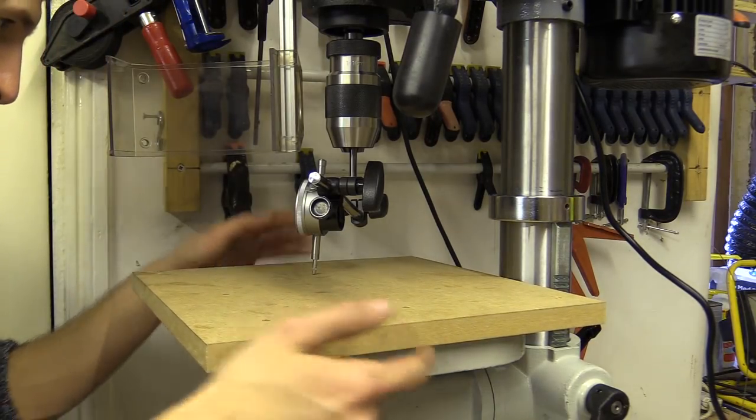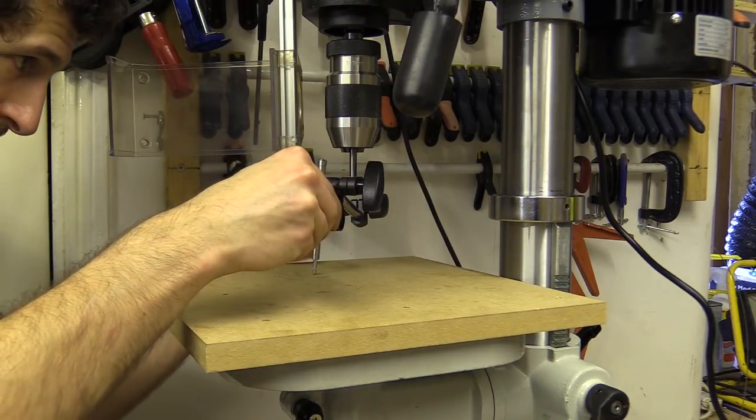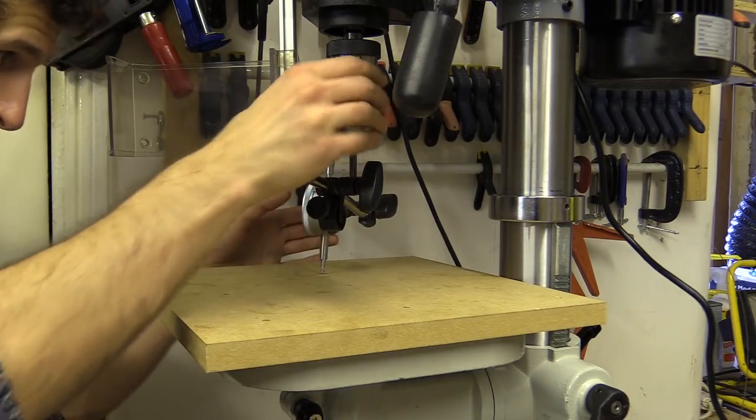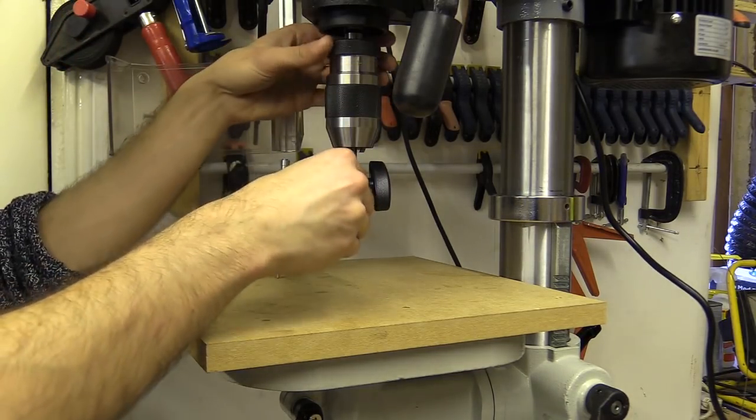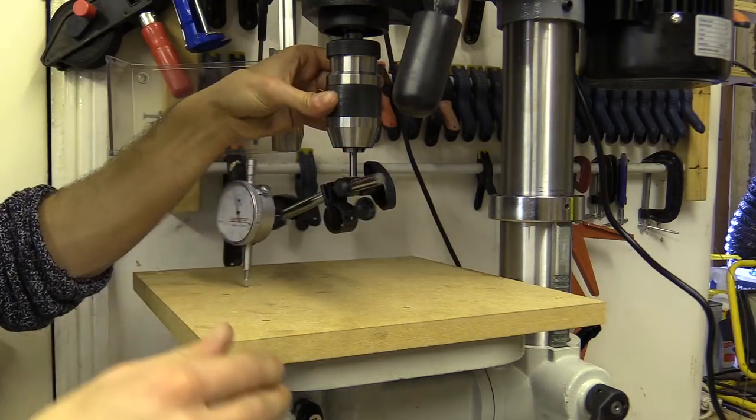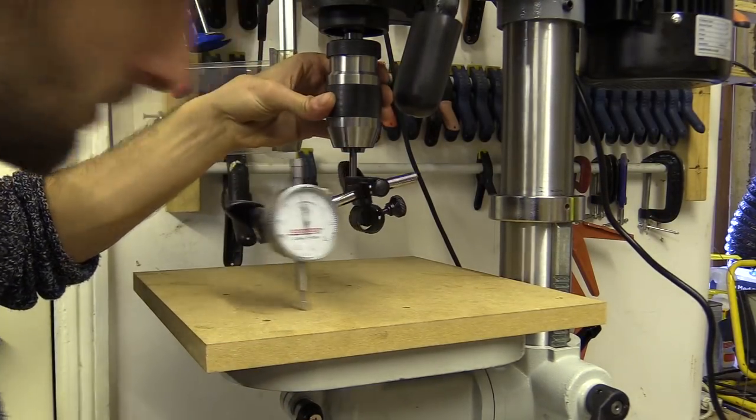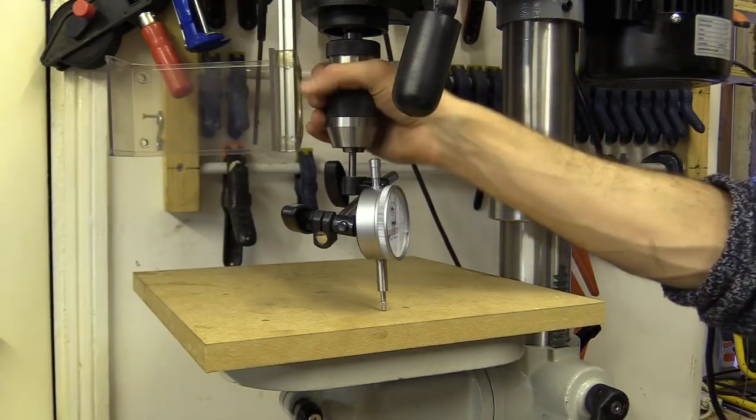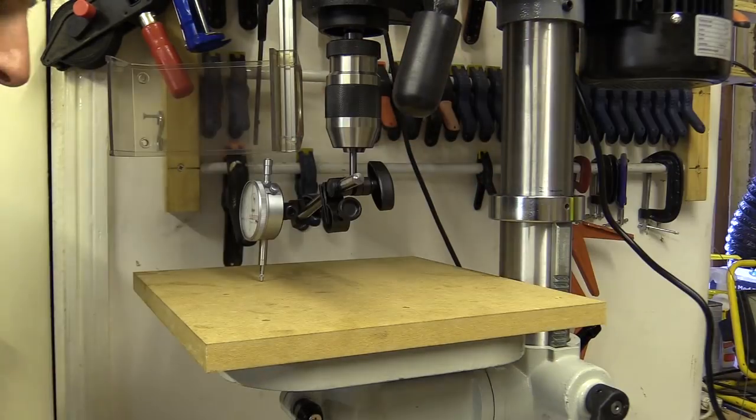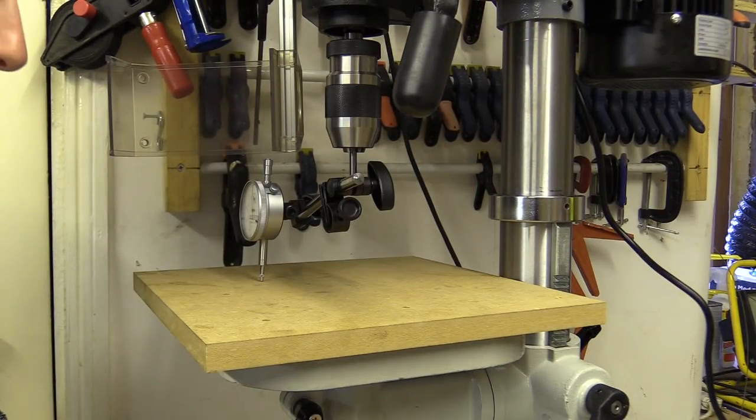I later did the same with a scrap piece of MDF resting on top of the table. There was a noticeable improvement on the MDF, but it later occurred to me that I should have rotated the bar in the jaws of the chuck just in case I had somehow compensated for the error between the chuck and the table. So it's about 0.09 off.